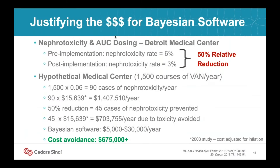Now that we've made a decision to proceed with Bayesian-based dosing methods, how do we justify the cost of the software? The major justification for the cost of this Bayesian platform is going to come from the cost avoidance associated with excess vancomycin toxicity when dosed for a trough of 15 to 20.